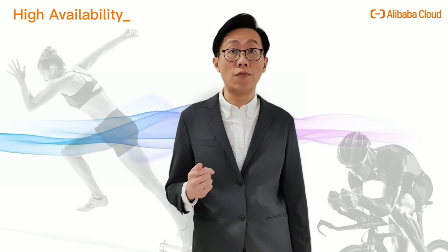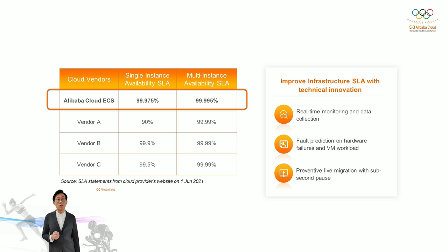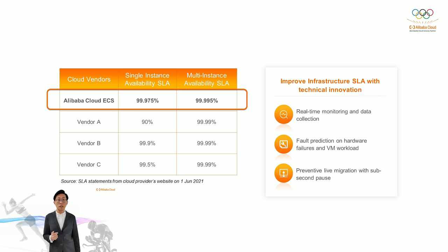Last but not least, high availability. Alibaba Cloud ECS provides the highest SLA commitment for both single instance and multiple instances in multiple availability zones among the top cloud providers worldwide. Alibaba Cloud has gained a lot of experience running infrastructure at ultra-large scale while maintaining high availability, currently supporting the world's largest e-commerce platforms such as Taobao and Tmall, with collaboration from data and academic scientists to accurately predict, prevent, and mitigate infrastructure issues without impacting customers. Each Alibaba Cloud region has multiple availability zones, so customers can deploy their application services in active-standby or active-active mode across availability zones to achieve higher availability.